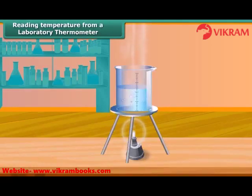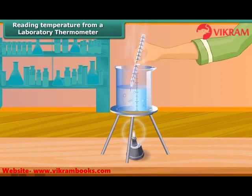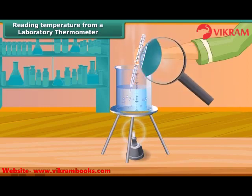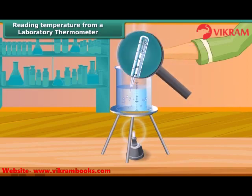Let us now measure the temperature of hot water kept in a beaker. Take a laboratory thermometer and immerse the bulb of the thermometer in the hot water. Observe the shining thread of mercury moving up in the thermometer tube. After some time, the mercury thread will stop rising and stand at one place. Read the temperature on the thermometer tube which corresponds to the top of the mercury thread — this is the temperature of the hot water.